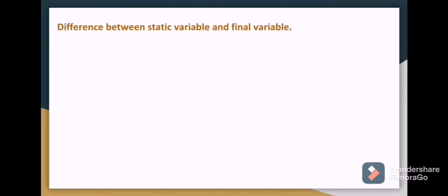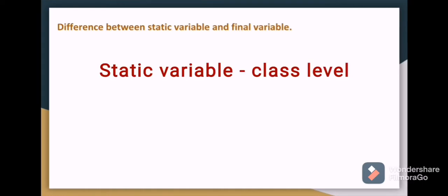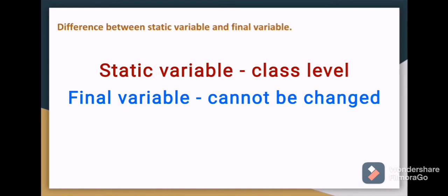Difference between static variable and final variable. Static variable means it is class level variable and it is common for all the objects, whereas final variable means a variable which cannot be changed.